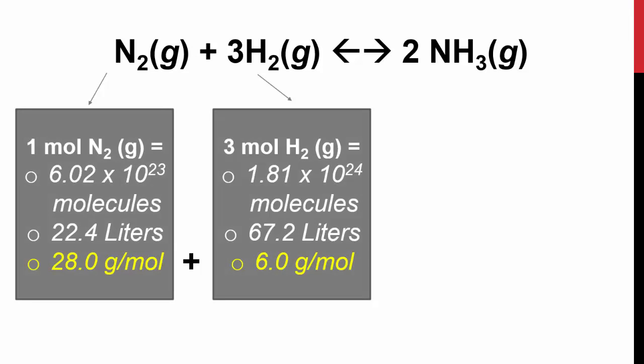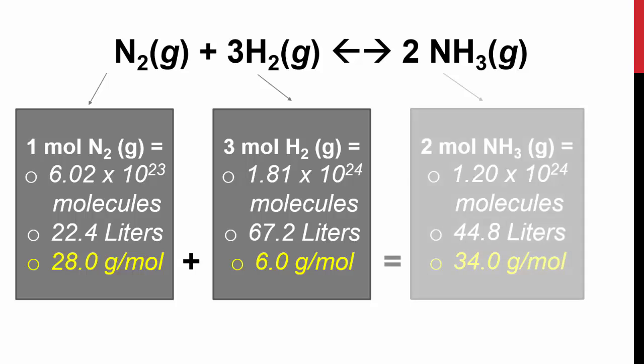When we have a balanced chemical equation, we end up with 28 grams per mole of nitrogen gas, 6 grams per mole of hydrogen gas, and then we end up with 34 grams per mole of the ammonia. Remember, conservation of mass, which means that the reactants, 28 plus 6, has to equal the products, which is 34.